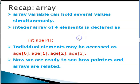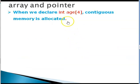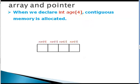Now, we will try to see the link between pointers and arrays. Perhaps you need to pay close attention here. When we declare int age[4], four contiguous memory locations are stored as shown over here. Age[0], age[1], age[2] and age[3].